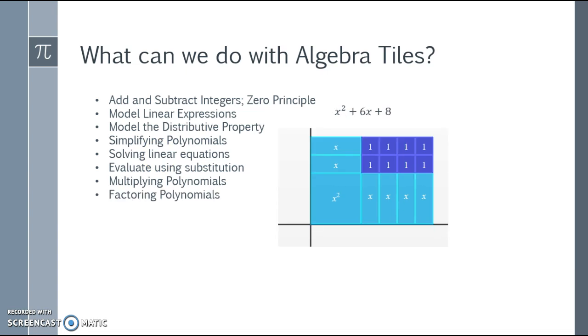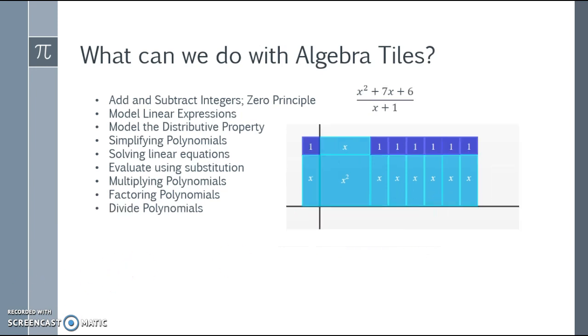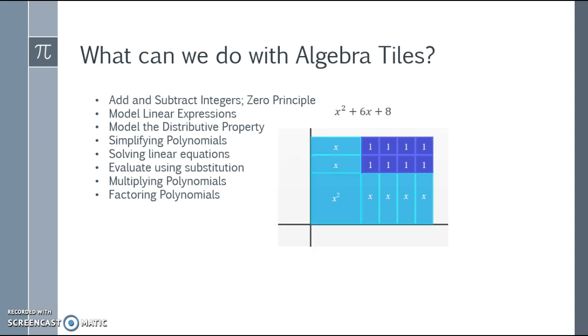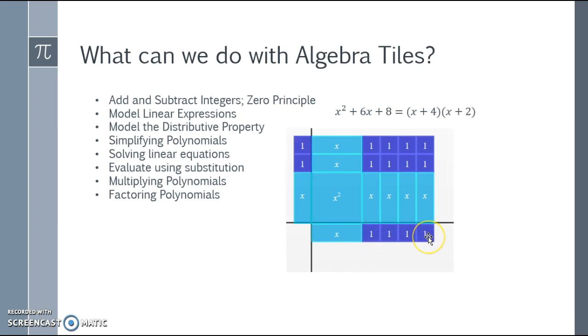That leads us to—if we can multiply polynomials, we certainly can factor polynomials. So let's say I start off with x squared plus six x plus eight. What might the two factors be that give me this solution? Well, this length here would be x plus four. We have x plus four down along the bottom and x plus two along the left hand side, so x plus four times x plus two would give us the x squared plus six x plus eight.